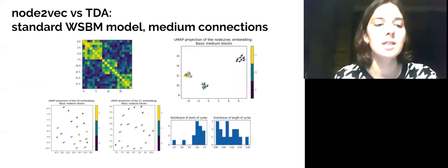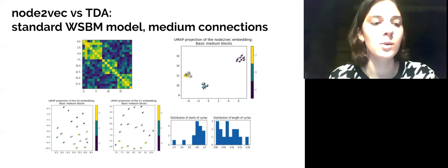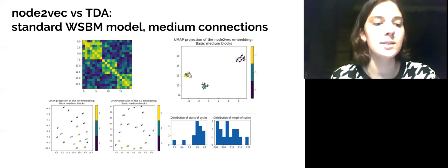On this slide, the results for a model with medium connections are shown. Medium and weak connections were sampled with the mean parameter equal to 1 and minus 1, respectively, and logistic transformation afterwards.